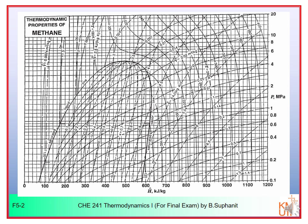Before we move on to see the principles and example, let's look at how we turn gas into liquid. On this pH diagram of methane, suppose that we have methane at the condition of one bar — 0.1 megapascal — and the temperature is at 300 Kelvin, around room temperature.